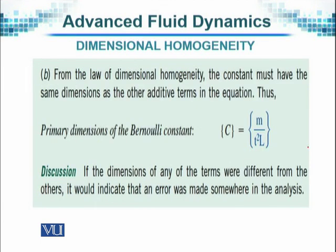All these terms have the same dimension, as we have seen. For the right-hand side, from the law of dimensional homogeneity, the left-hand side and the right-hand side should have the same dimensions. Therefore, C will have the dimensions M over T squared times L. If the dimensions of any term were different from the others, that should alarm us that there is a problem and we need to address it. All terms should have the same dimensions.